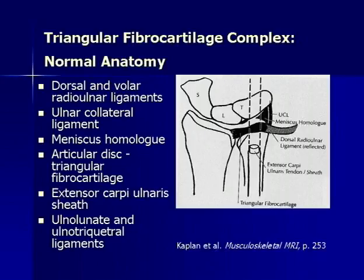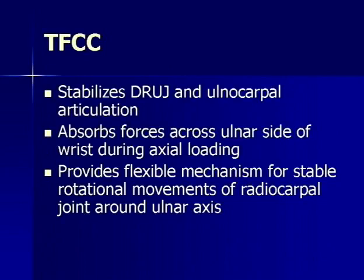To review the normal anatomy of the TFCC: dorsally and volarly we have the dorsal and volar radial ulnar ligaments, the ulnar collateral ligament, the meniscus homolog which is fibrovascular tissue, and the articular disc which is the triangular fibrocartilage. Associated structures include the extensor carpi ulnaris sheath and the ulnolunate and ulnotriquetral ligaments. The TFCC stabilizes the distal radio-ulnar joint, acts as a cushion to absorb force across the ulnar side during axial loading, and provides a flexible mechanism for rotational movements around the radiocarpal joint.